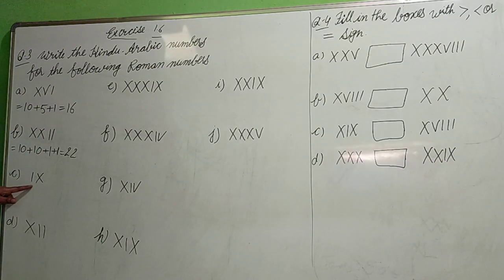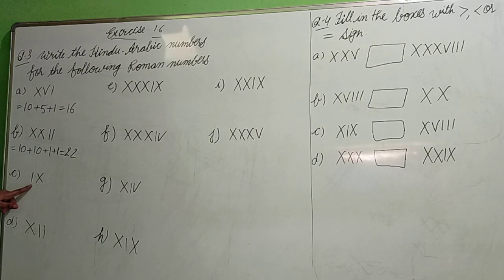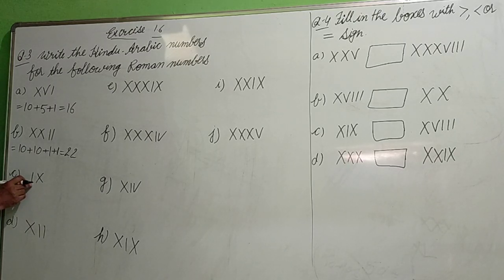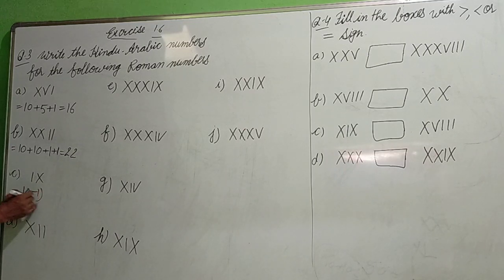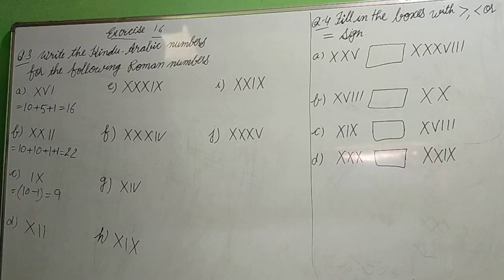Next is IX. Now I is small and X is big. When the first symbol is smaller, what happens? Subtraction. So IX means 10 minus 1, which equals 9. Okay.